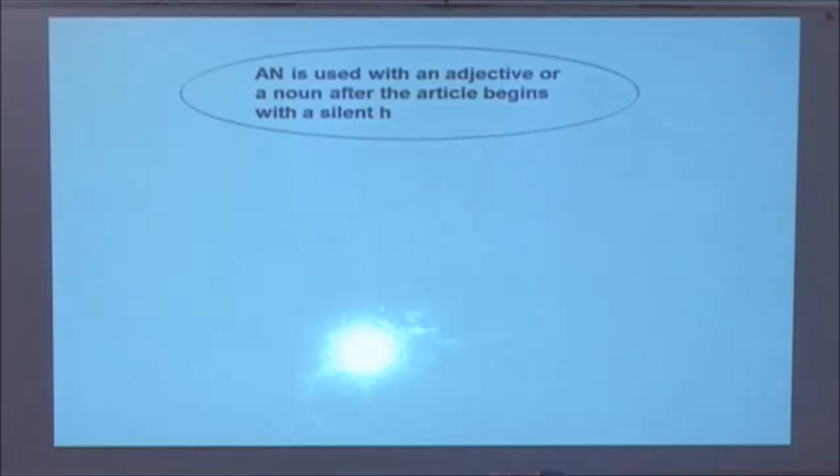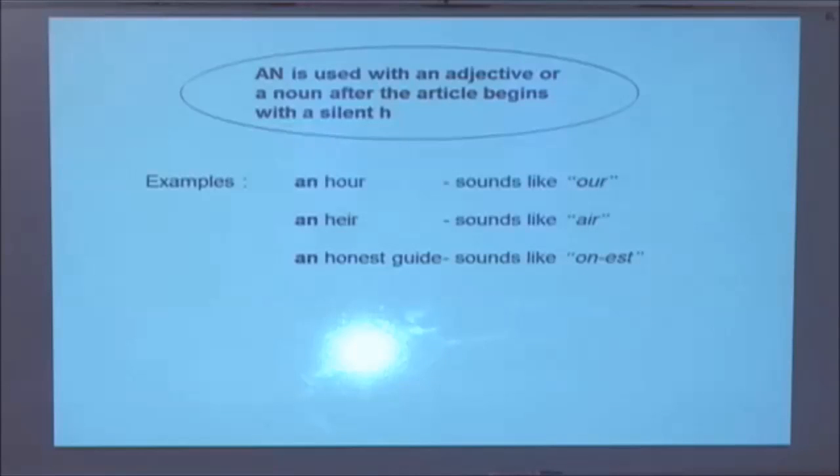An is used with an adjective or a noun after the article begins with a silent h. Examples, an hour, an egg, an honest guide, an honourable man.